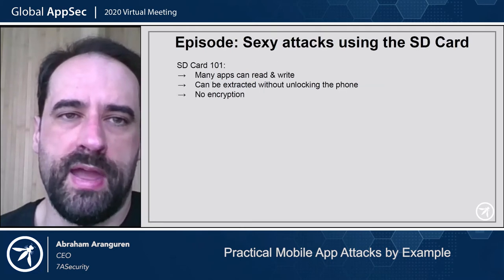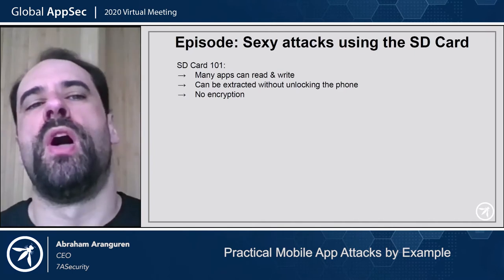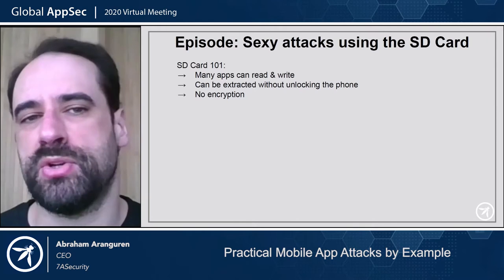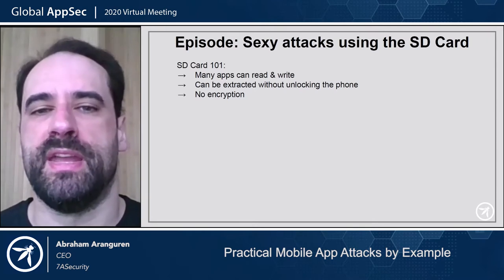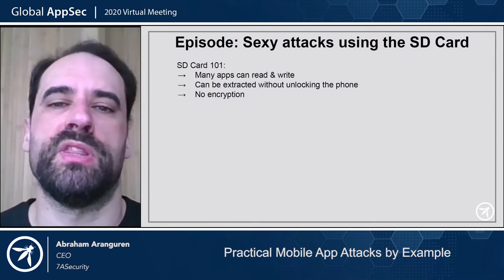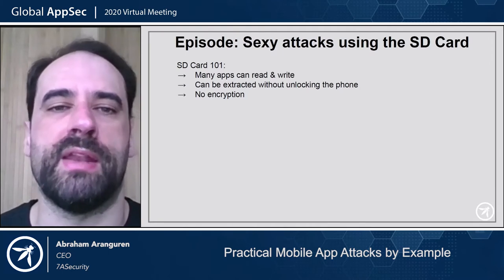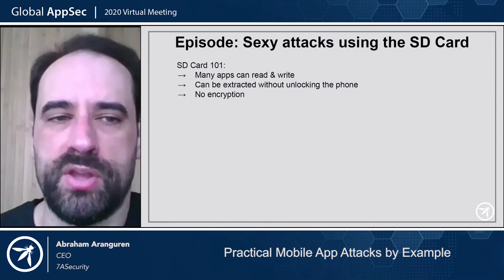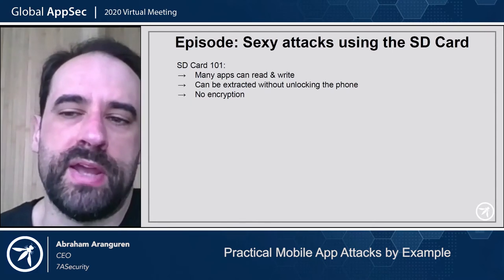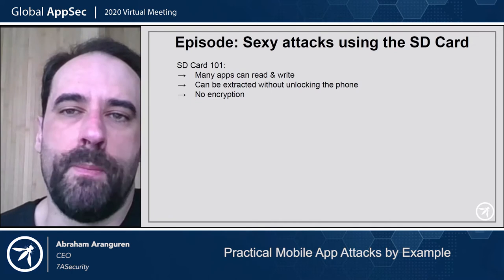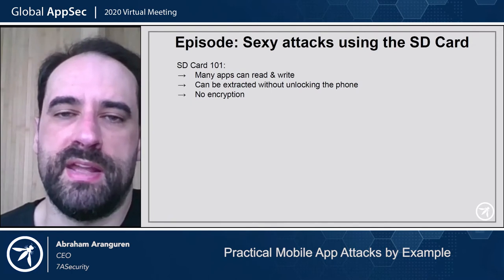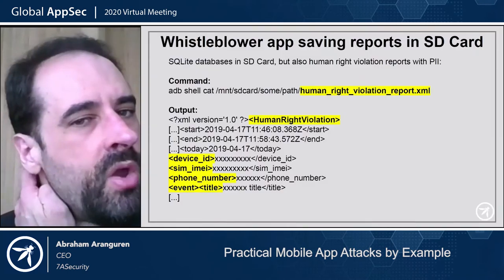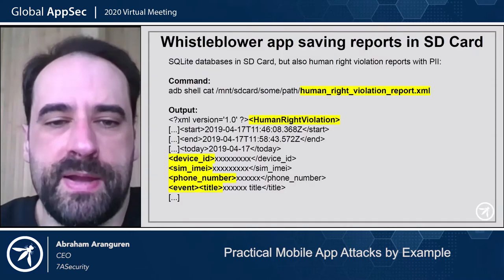On Android, the SD card is kind of the wild west, because many applications can read and write data there. It can be extracted without even unlocking the phone — a regular thief can steal your phone and extract the SD card without unlocking it first. There's typically no encryption, which makes the SD card a perfect location for physical attacks and attacks from other applications on the phone.